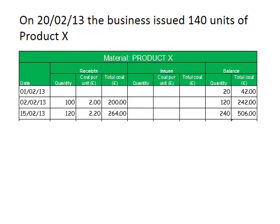Our next transaction occurs on the 20th of February, where the business issues or sells 140 units of Product X. We need to calculate the associated cost of those units. We're using AVCO, so we calculate the average cost per unit of the stock before this transaction occurs. At the end of our previous transaction we had 240 units which cost in total £506, so per unit that works out at £2.108.